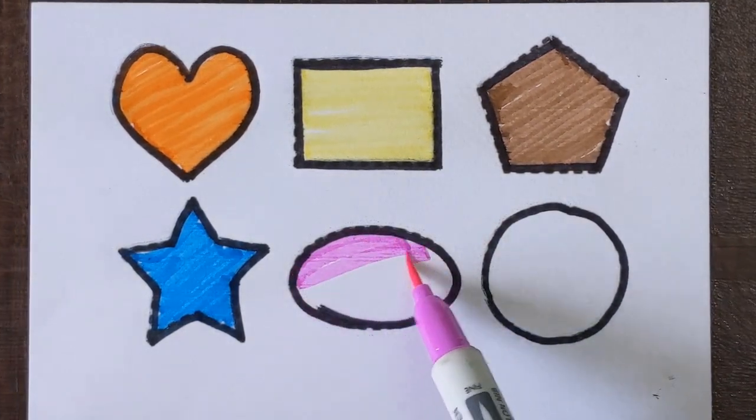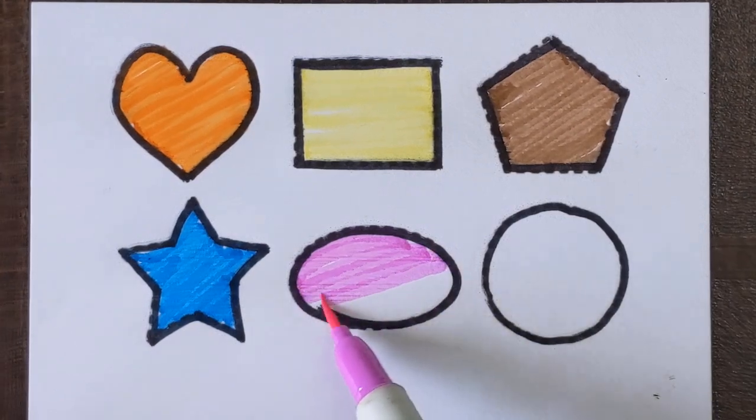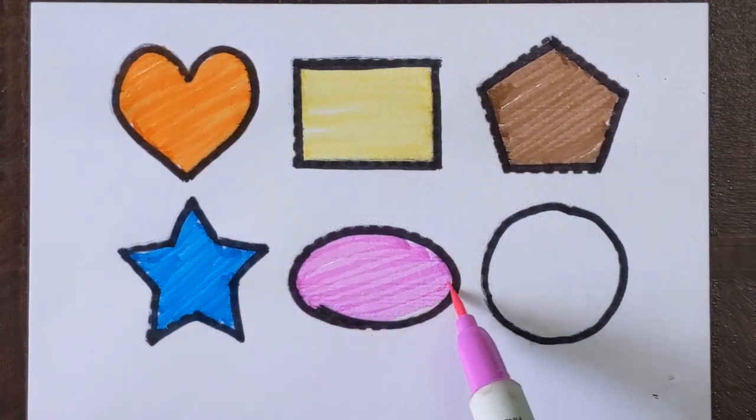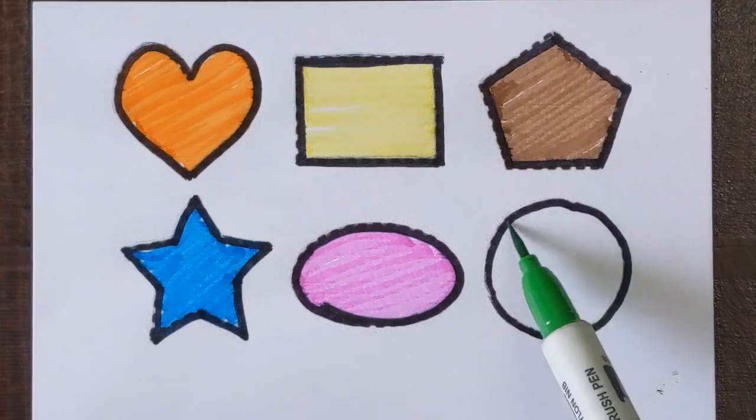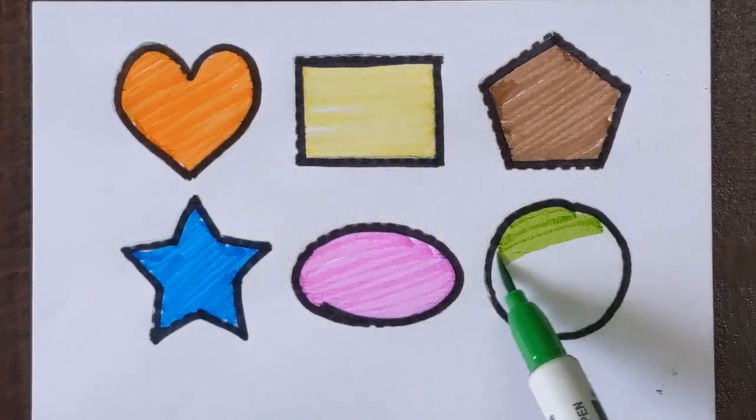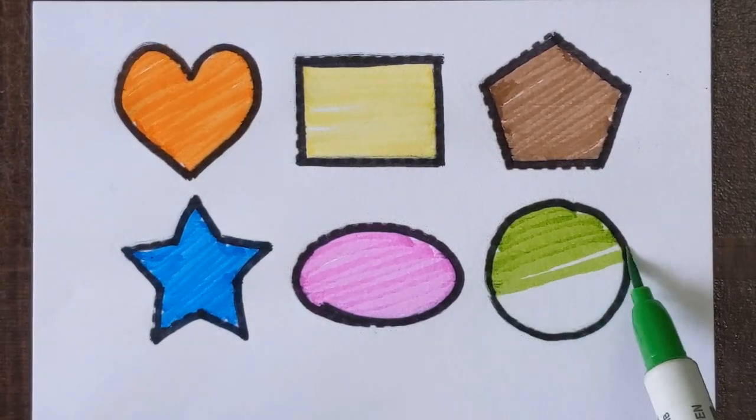Oval shape with a purple color. And this is circle shape with a light green color.